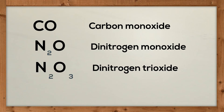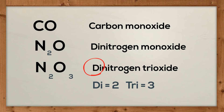Next you have N2O3. Let's put all the rules together. You have dinitrogen, because you have two nitrogens, and then you have three oxygens, so it will be tri-, and then you add the -ide. So it will be trioxide. Dinitrogen trioxide.